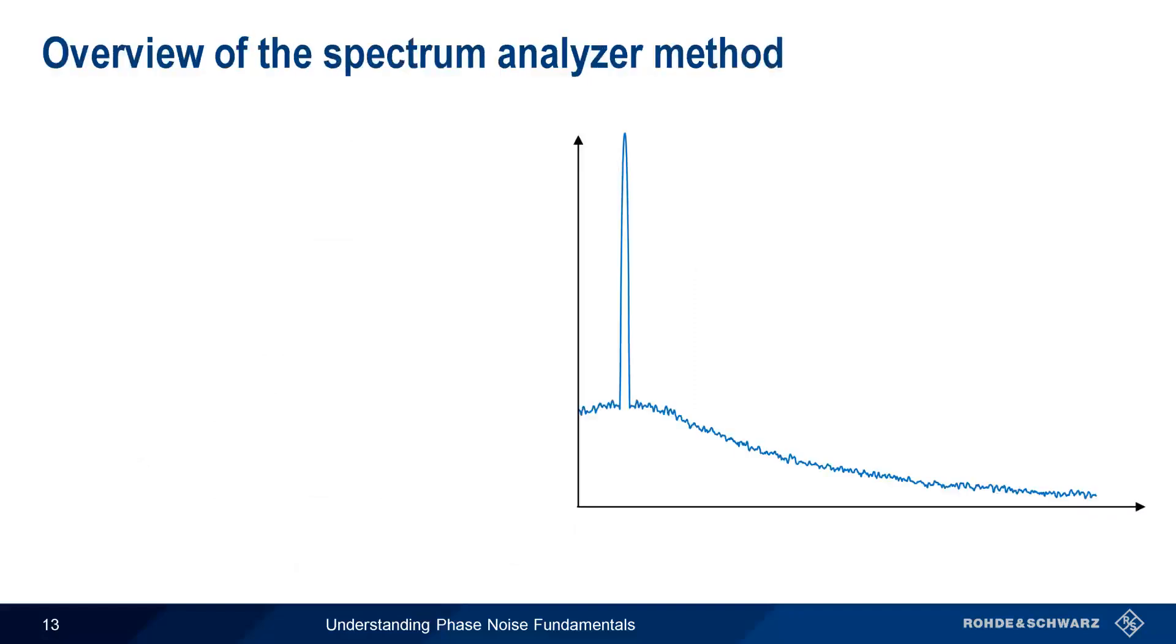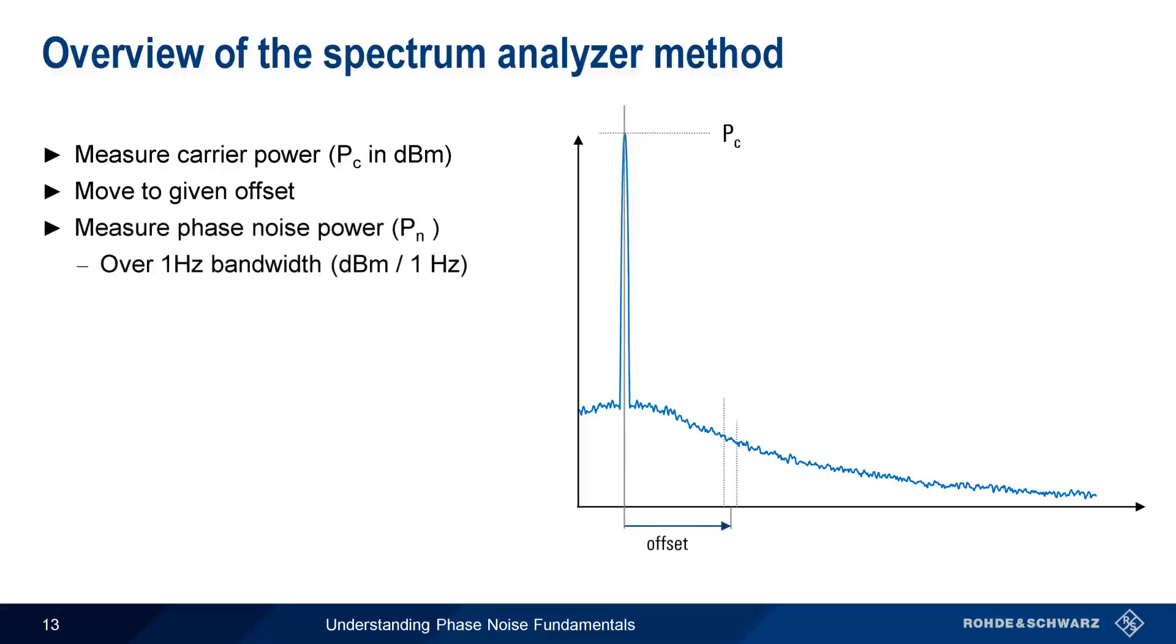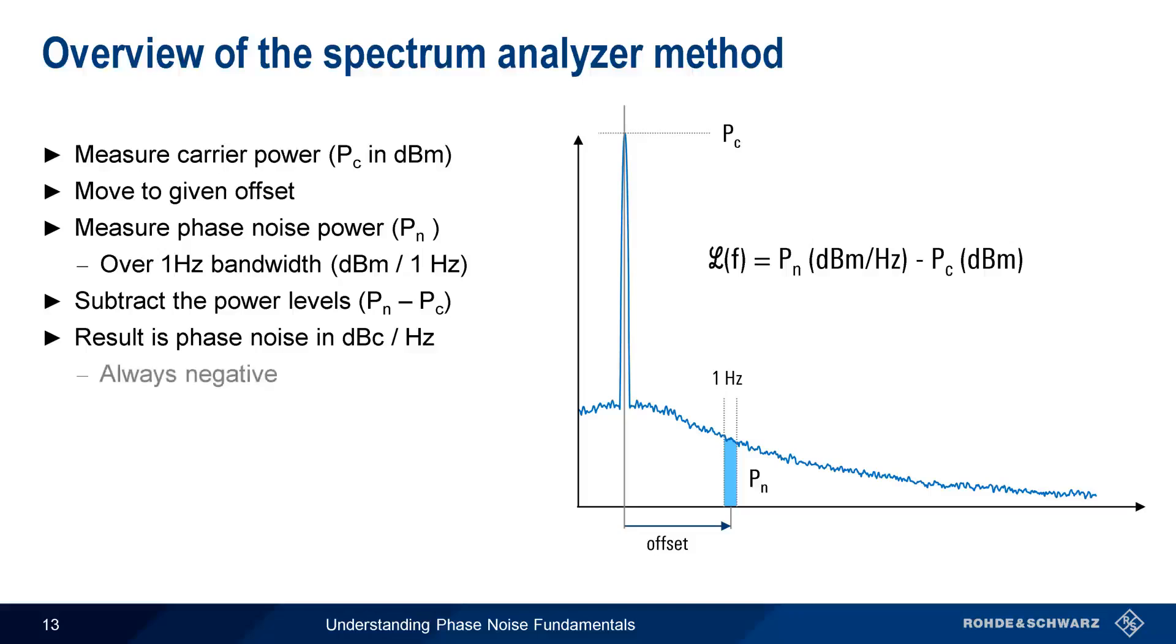We'll start by looking at the spectrum analyzer, or direct spectrum method, since this will also help us understand most of the basic phase noise measurement concepts and measurement results. The first step in the spectrum analyzer method is measuring the power of the carrier, that is the nominal oscillator output signal, as an absolute power in dBm. We then move to a given frequency offset from the carrier, and measure the noise power within a 1 Hz bandwidth. We then subtract the carrier power from the noise power, and the result is phase noise in units of dBc per hertz. Note that these values will always be negative.